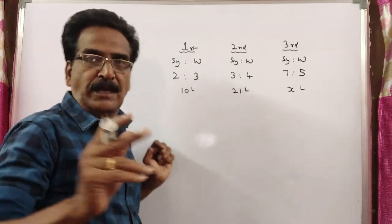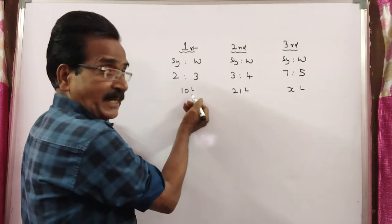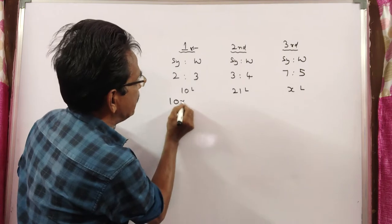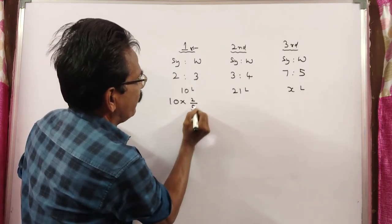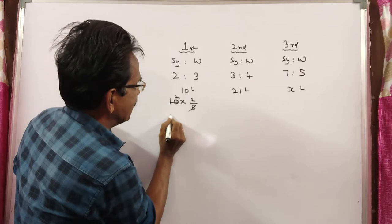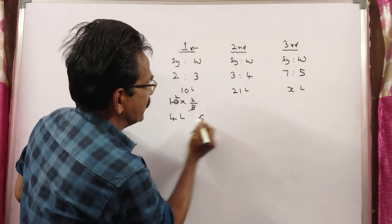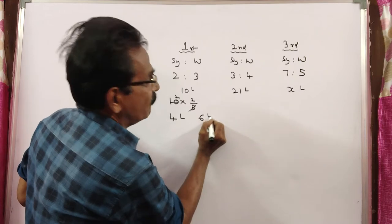See friends, from the first bottle, we have drawn 10 liters. If 10 liters is drawn, how much syrup is drawn? 10 into 2 by 5, that is 4 liters syrup is drawn. 4 liters syrup means 10 minus 4, 6 liters water is drawn.